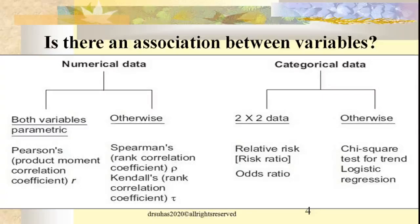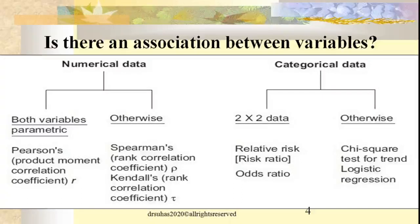But if one of the data is numerical and the other is ordinal or nominal, then based on the situation, we could select the non-parametric version like Spearman's rank correlation or Kendall's rank correlation. Based on the scenario, you can select either the parametric or the non-parametric version.